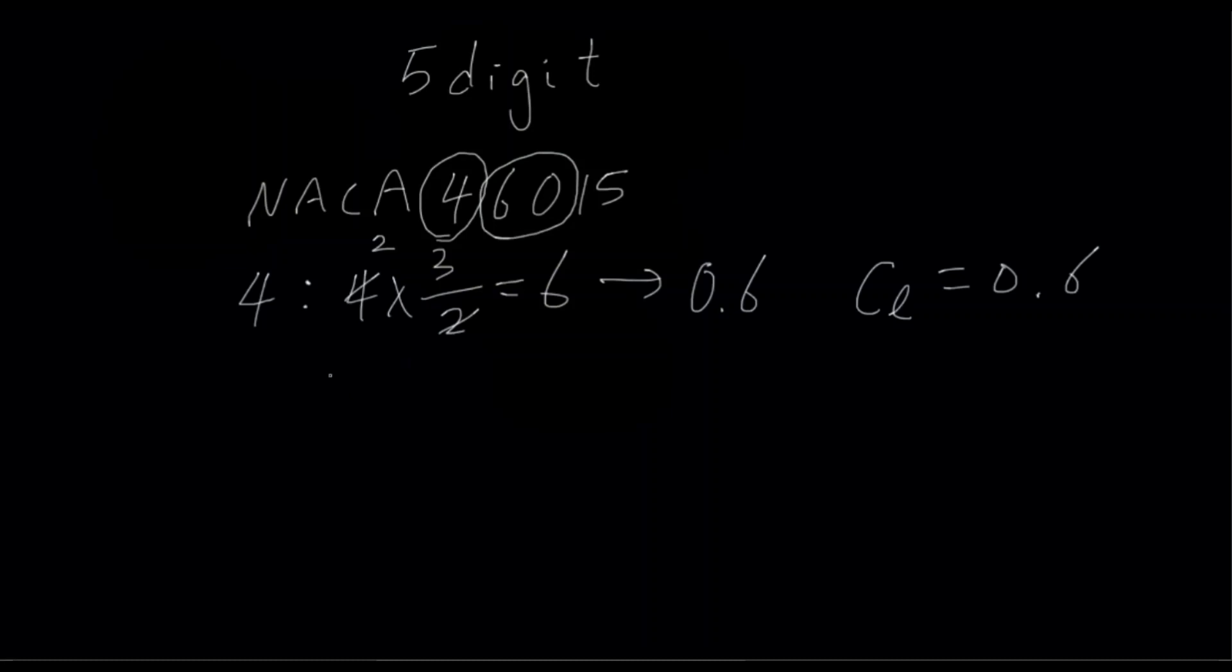Our second number is 6. But this is actually not just 6, but we count these two numbers. 6, 0. For this, I'll use a yellow color just to differentiate from the first number. So 60 represents the location of the maximum camber. Now, again, similar to 4, we have to multiply it by some kind of factor. This factor is a bit easier to remember. You just have to multiply it by 1 over 2. It's just a half. So it's 30. Now, location of the camber is typically written in reference with the chord. If you just compare it with the 4-digit ones. So this one is 0.3C or 30% of C from the leading edge.